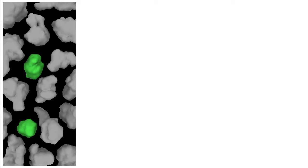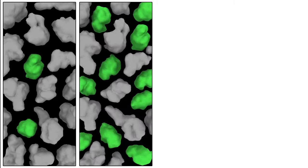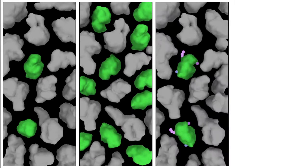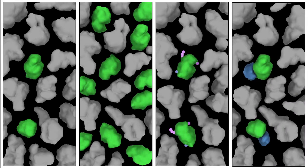Western blotting is a technique that allows researchers to detect changes in a particular protein of interest, such as changes in concentration, addition or subtraction of small chemical modifications, and changes in interactions with other proteins.